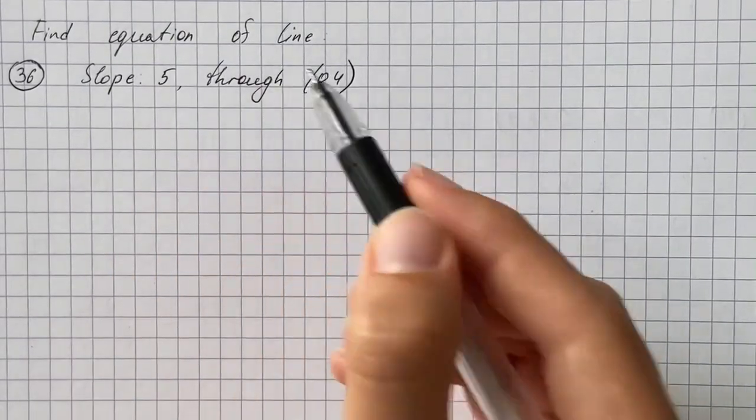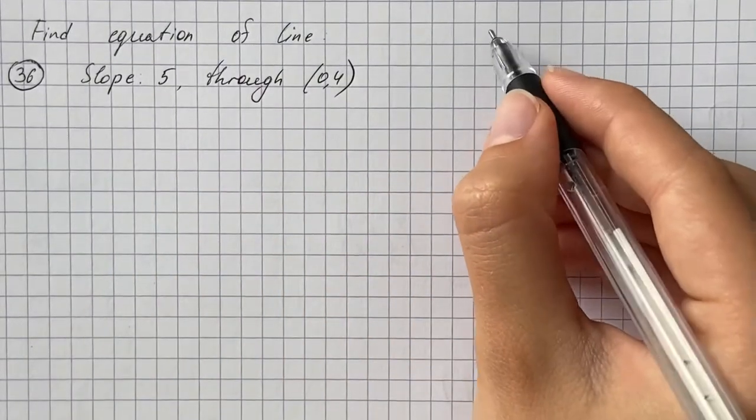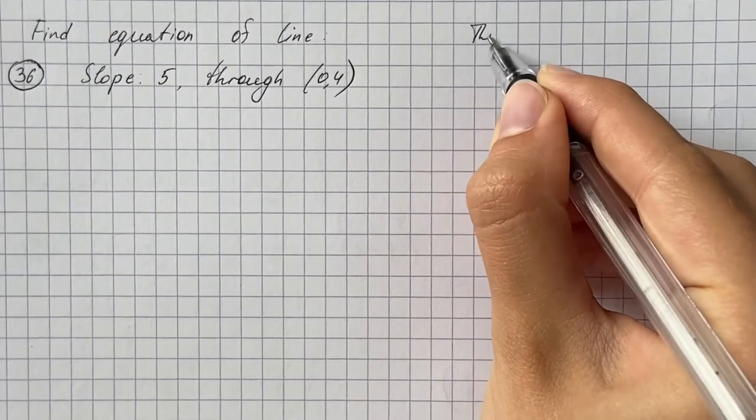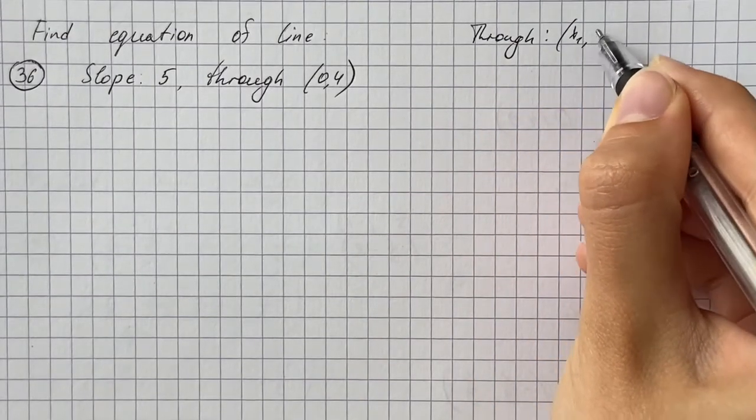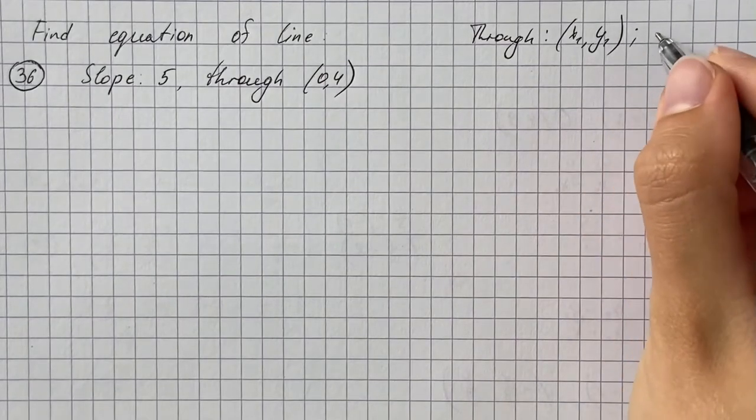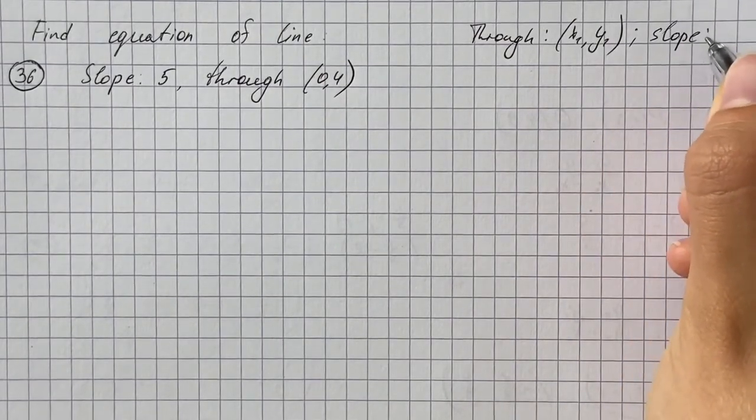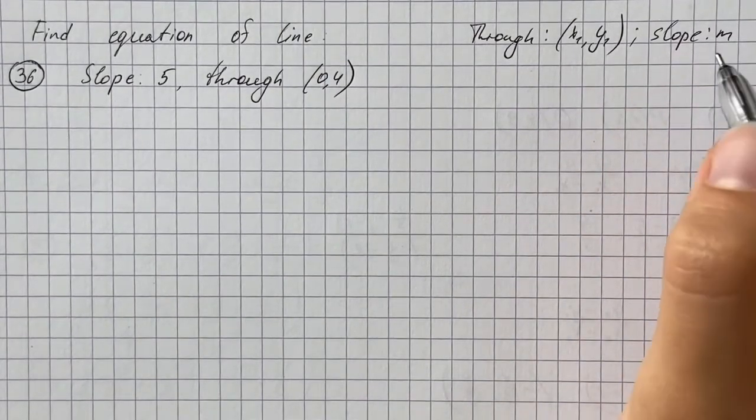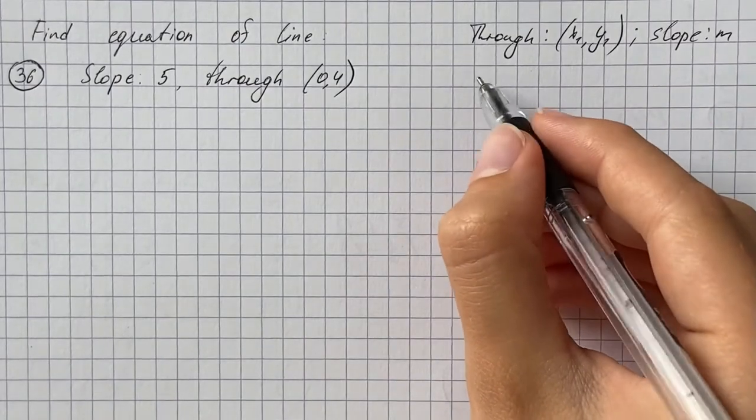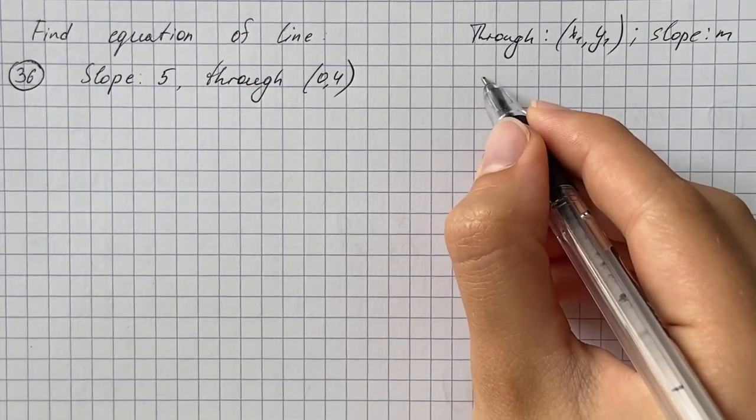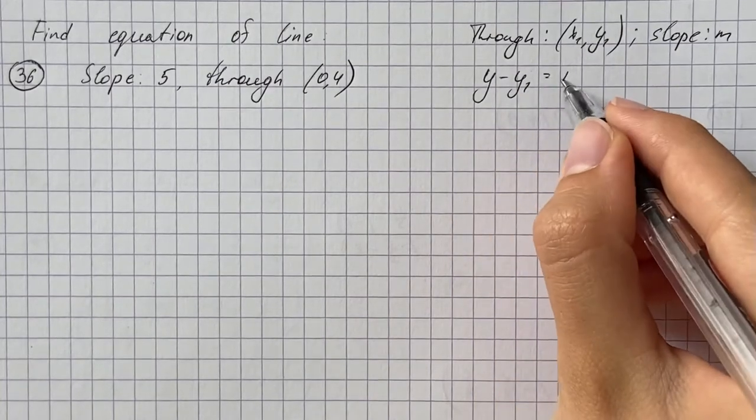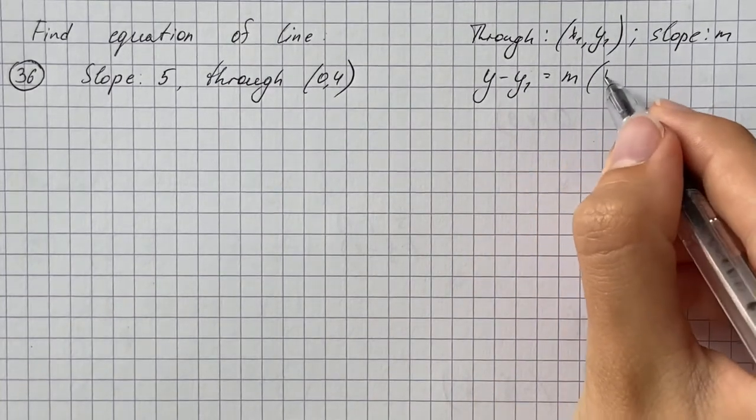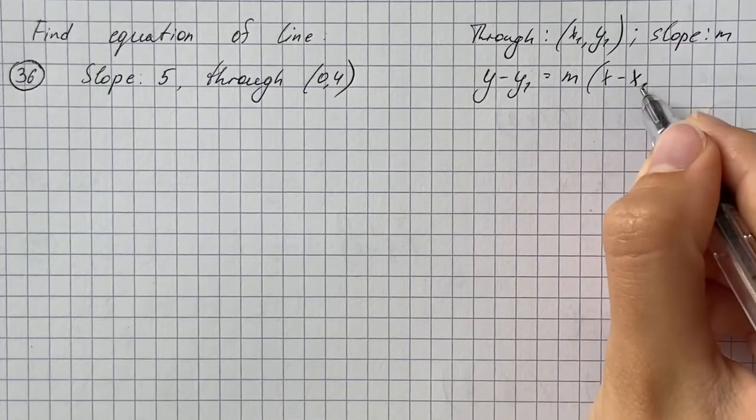We have to find the equation of a line. Remember that the line goes through point x1, y1 and has slope m. The point-slope formula for finding the equation is y minus y1 equals slope m times x minus x1.